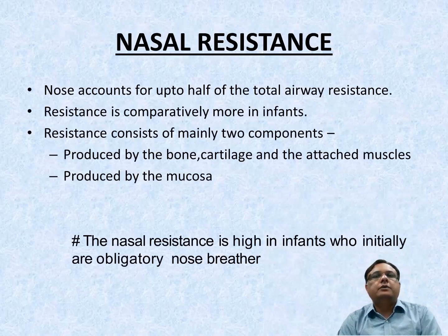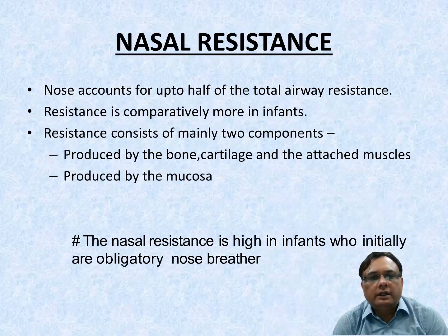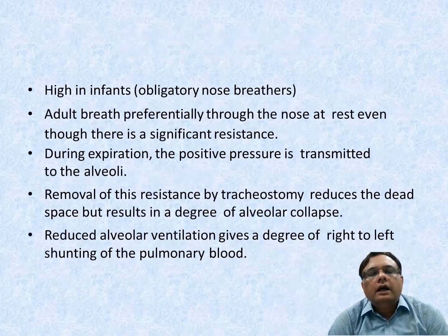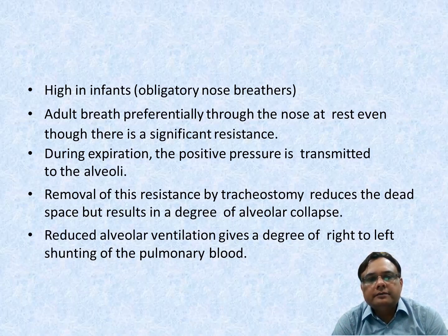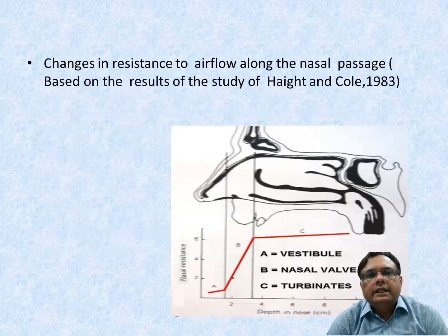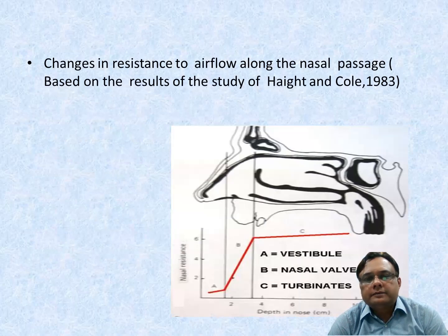Nasal resistance: the nose accounts for up to half of the total airway resistance. Resistance is comparatively more in infants. Resistance consists of two components: produced by bone, arteries and attached muscles; and produced by the mucosa. Nasal resistance is high in infants who are initially obligatory nose breathers. Adults breathe preferentially through the nose at rest. During expiration, positive pressure is transmitted to alveoli. Removal of this resistance by tracheostomy reduces dead space but results in alveolar collapse and reduced alveolar ventilation, giving a degree of right-to-left shunting of pulmonary blood.